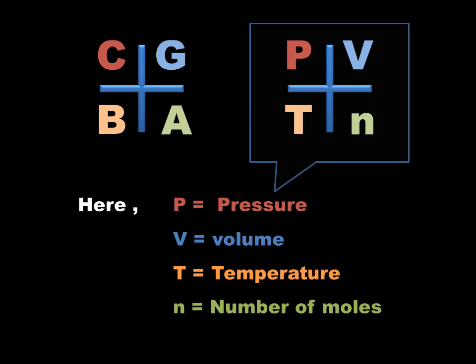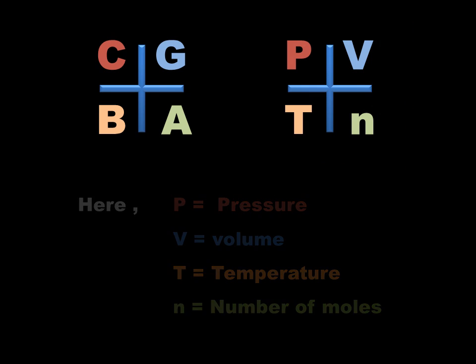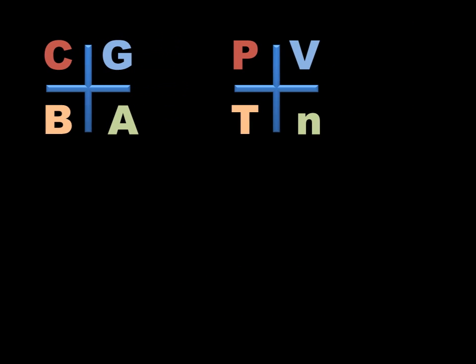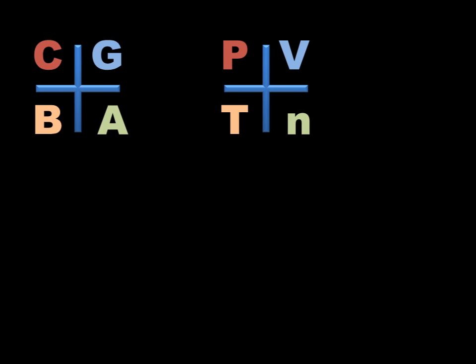Here, P equals pressure, V equals volume, T equals temperature, and N equals number of moles. The core relationship is P·V by T·N equals constant.